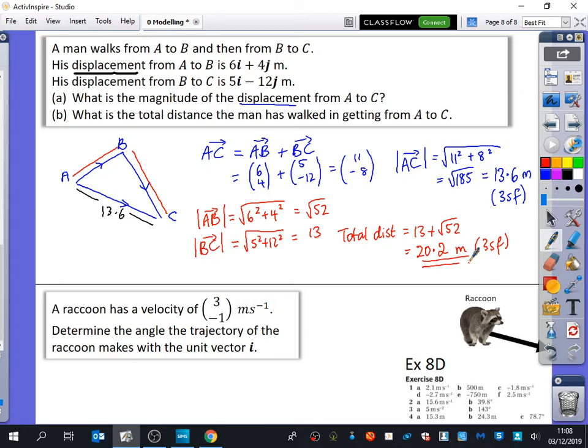And then the second question is pretty quick. It says that a raccoon, it's got a nice little picture of a raccoon down there. A raccoon has a velocity of 3 minus 1 ms to the minus 1, meaning meters per second. Determine the angle the trajectory of the raccoon makes with the unit vector i. The trajectory means the direction of the motion.